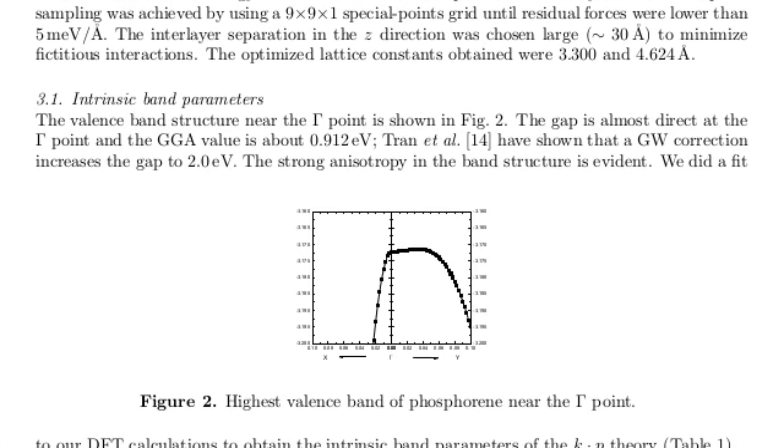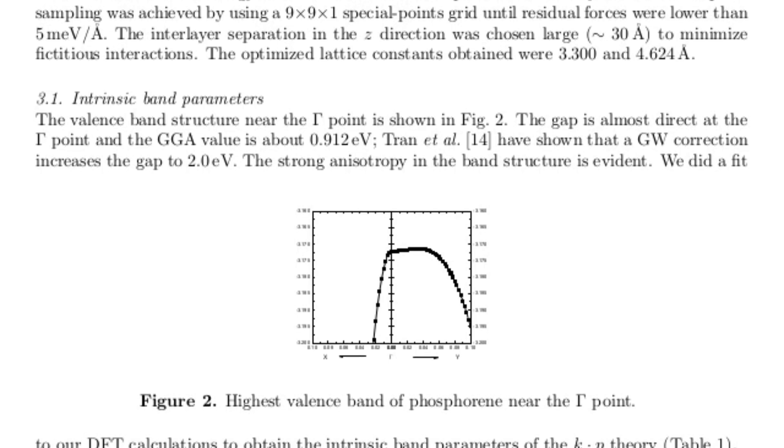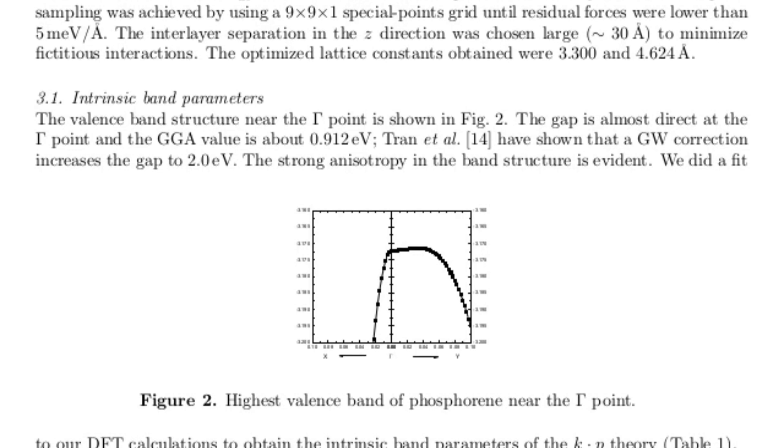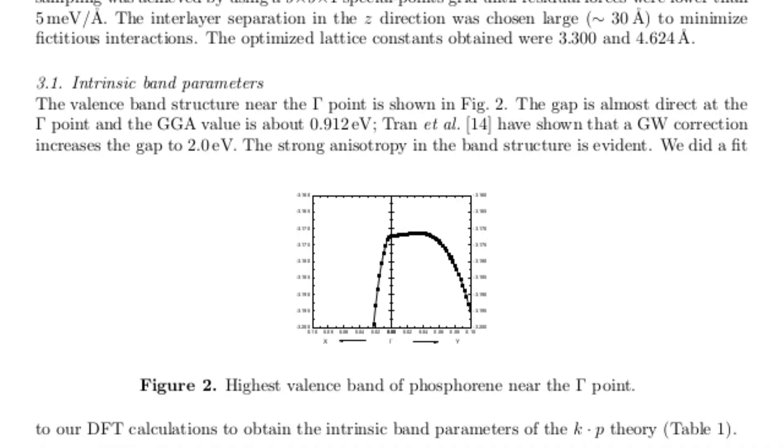So first in figure two you can see a band structure plot of the valence band around the gamma point in the two different directions in the Brillouin zone.